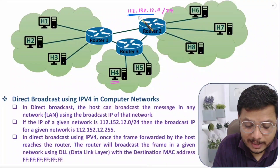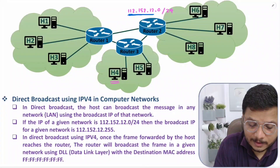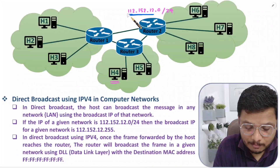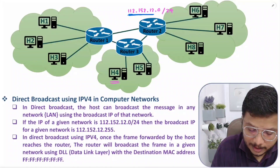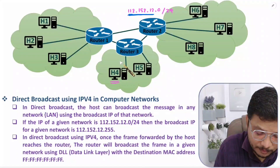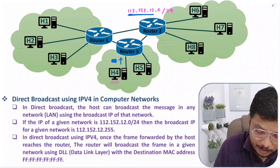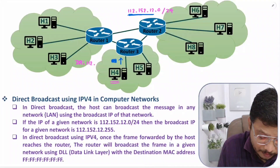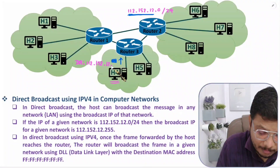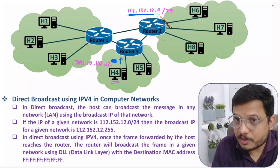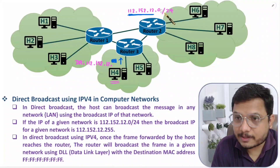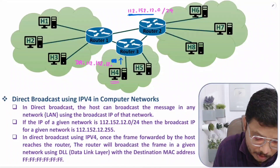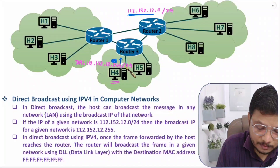So how can H4 broadcast in this network which has network IP 112.152.12.0/24? The mask portion should be kept as-is, and the bits other than the mask should be all ones. So H4 will transmit a frame with destination IP as 112.152.12.255/24 — the mask part 112.152.12 stays as-is, and the remaining 8 bits all ones gives 255. This is the destination IP in the frame that will be given to the router.